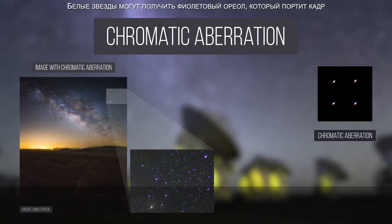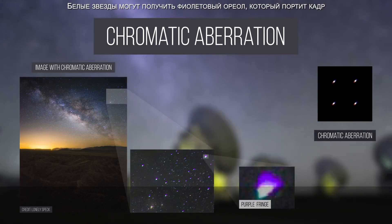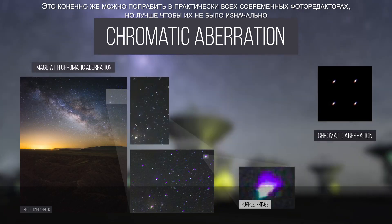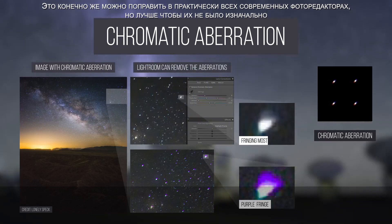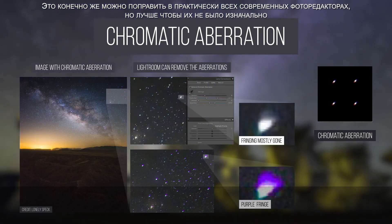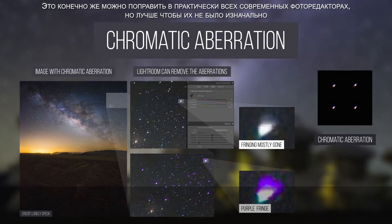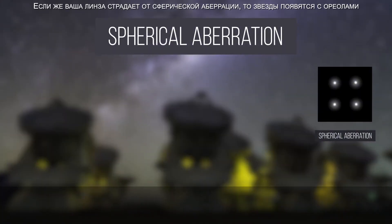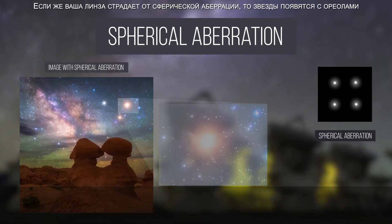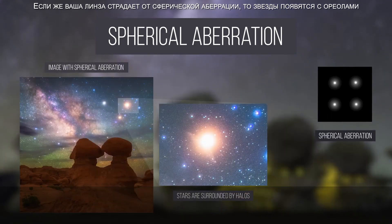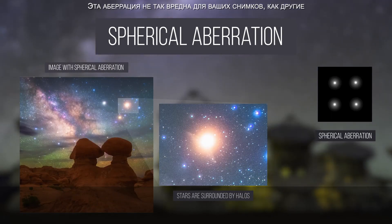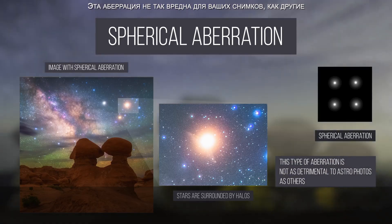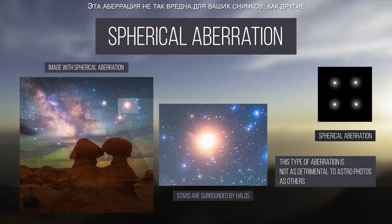White stars can gain a purple halo, which can be very distracting in astrophotos. In Lightroom, there is a button to eliminate chromatic aberrations, but it's best to have none in the first place. Spherical aberrations are less common. In the case that your lens suffers from spherical aberration, stars will appear with halos surrounding them. This aberration isn't as detrimental to your astrophotos as others, and stopping down the lens often corrects it.